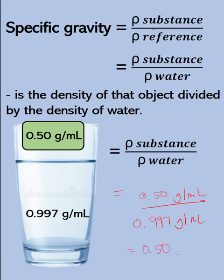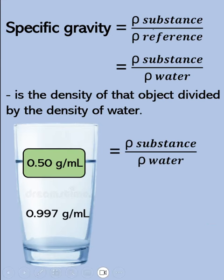We can also interpret this result. A specific gravity of 0.50 means that 50% of this object will be submerged under the water, and 50% will be above the surface of the water.